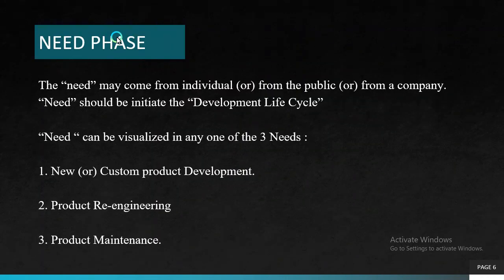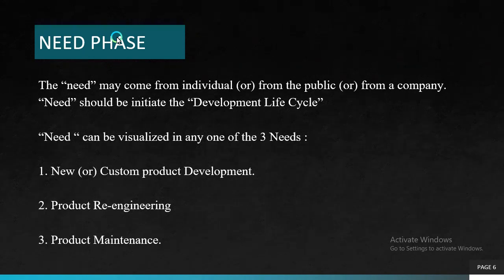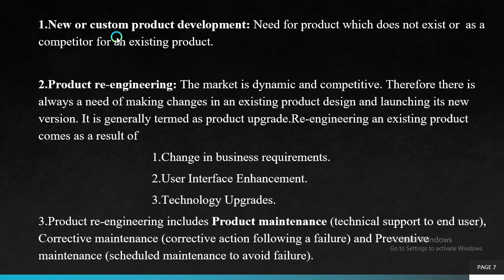The first phase is the need phase. The need may come from an individual, from the public, or from a company. Need should initiate the development life cycle. Need can be visualized in any one of three ways: new or custom product development, product re-engineering, and product maintenance. New or custom product development refers to the need for a product which does not actually exist in the market, or a product which adds as a competitor to an existing product in the current market, leading to the development of a completely new product.